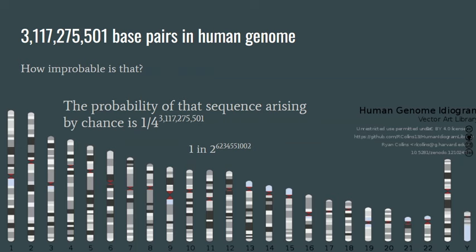Let's consider something else. There are 3,117,275,501 base pairs in the human genome. Now how improbable is that?